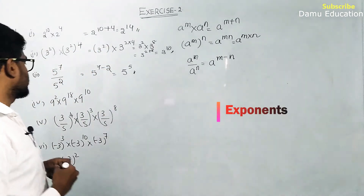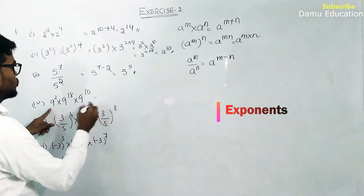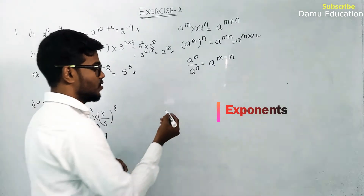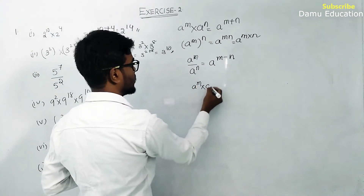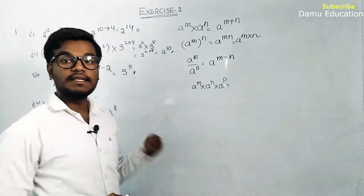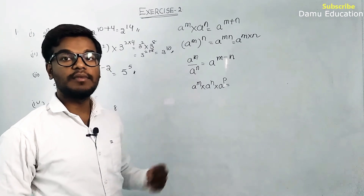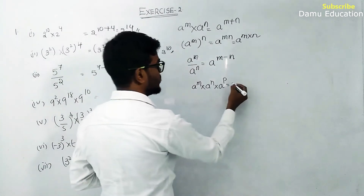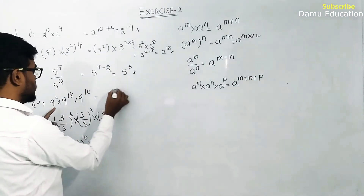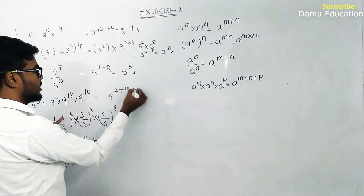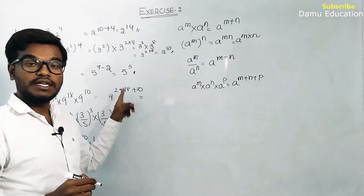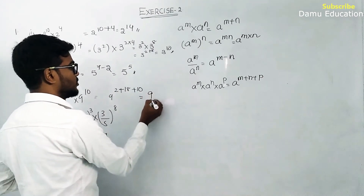Next: all bases are same. Using a power m into a power n into a power p equals a power m plus n plus p. So 9 power 2 plus 18 plus 10: 2 plus 18 is 20, 20 plus 10 is 30. Answer is 9 power 30.